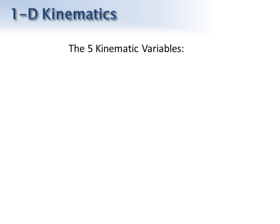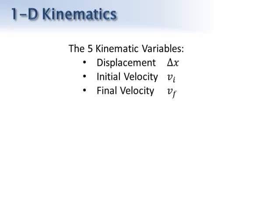The basic strategy for kinematics is to throw the variables into a set of equations and then solve those equations for the unknown. To do this, we'll deal with five variables. The five variables are displacement, initial velocity, final velocity, acceleration, and time.